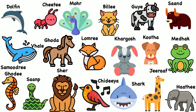Dolphin. Cheeti. Mor. Billi. Gai. Sand. Veil. Ghoda. Lomri. Kargosh. Kutta. Medak. Samudri ghori. Saanth. Sheer. Chiriya. Shark. Giraffe. Hathi.